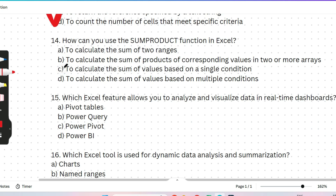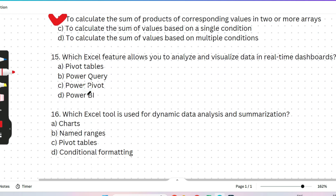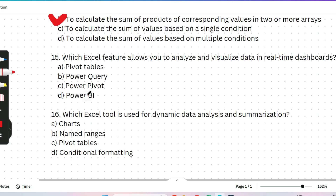The next question: how can you use the SUMPRODUCT function in Excel? Options: (A) to calculate the sum of two ranges, (B) to calculate the sum of products of corresponding values in two or more arrays, (C) to calculate the sum of values based on a single condition, or (D) to calculate the sum of values based on multiple conditions. I recommend getting the prime materials for Accenture, which include all coding questions, MS Office, and cloud-based questions for the upcoming app drive — available at instagram.com/technologyifuwillgetit. Please note this is paid. The correct answer is B.